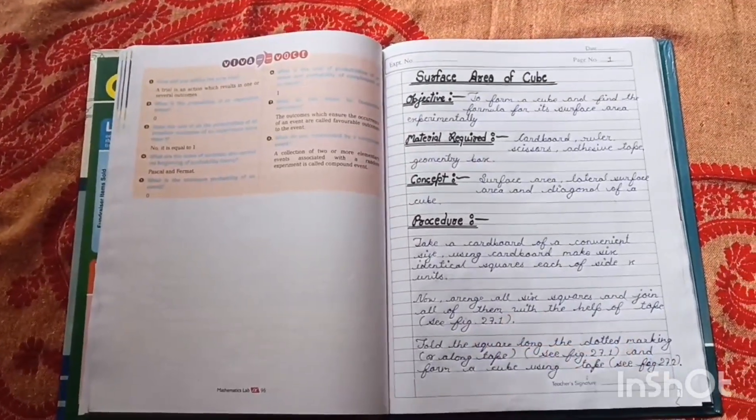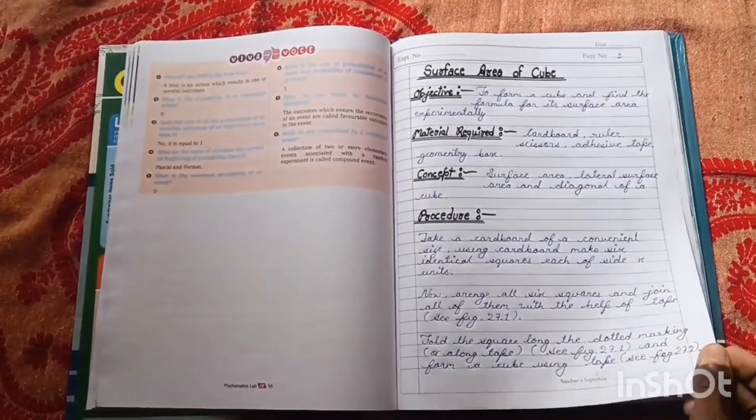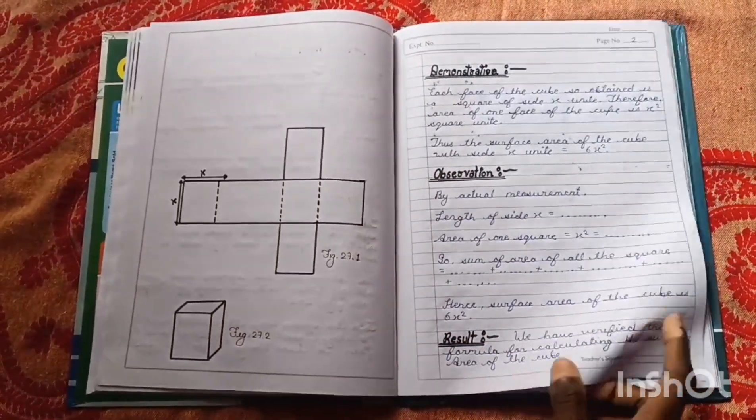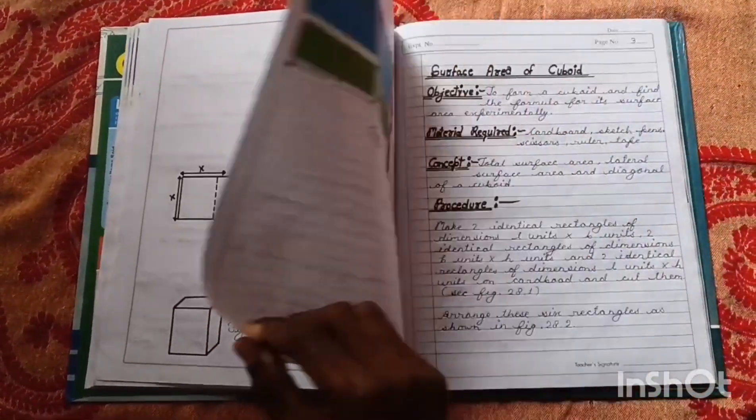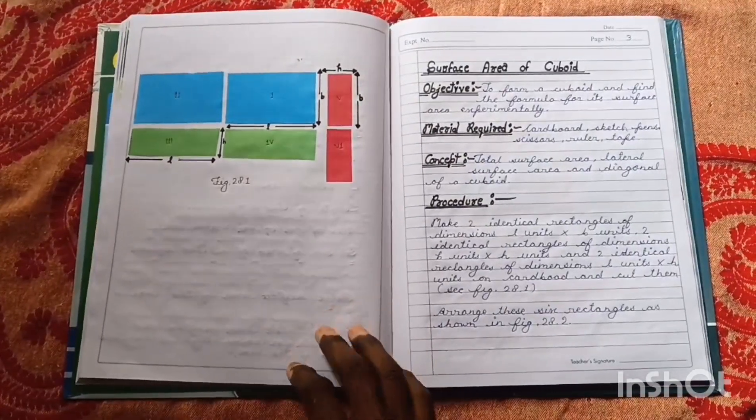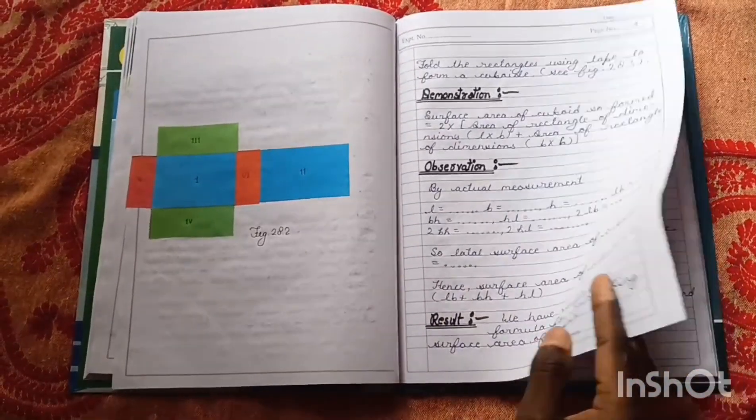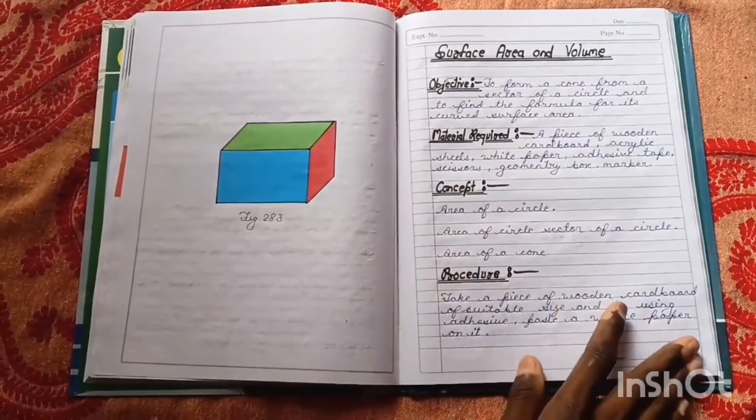Surface Area of Cube, Chapter 1. Results, Question and Answer. Surface Area of Cube, Results. Surface Area of Volume.